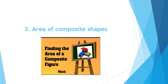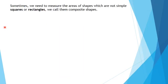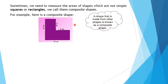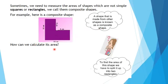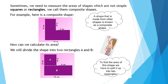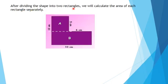Our last objective is to find out the area of a composite shape. Sometimes we need to measure the area of shapes which are not simple squares or rectangles. We call them composite shapes — a shape that is made from other shapes is known as a composite shape. To find out the area of this shape, we have to split it up into two rectangles, dividing the shape into rectangles A and B.